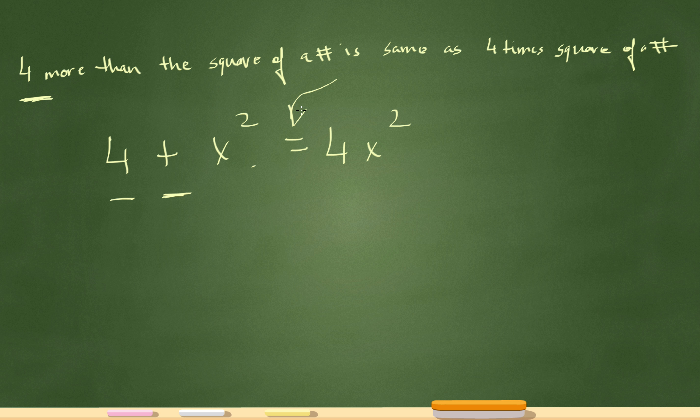Is is always an equal sign. The same as 4 times the square of a number, so 4x squared, right? 4 times the square of a number. And now I have my equation, which I'll rewrite over here: 4 plus x squared equals 4x squared.